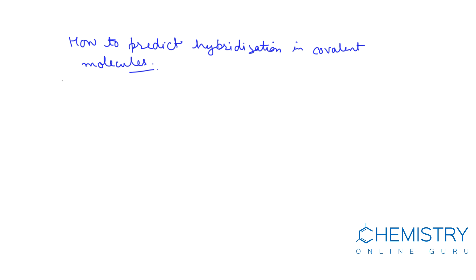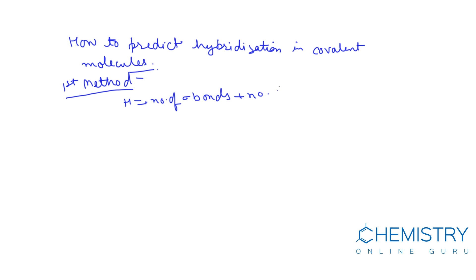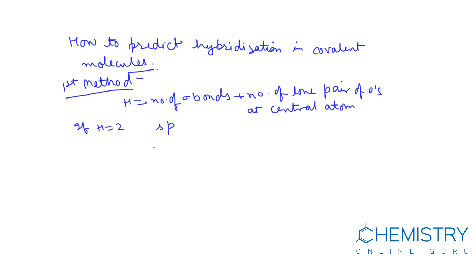There are two methods to predict the type of hybridization. The first method uses: H equals the number of sigma bonds plus the number of lone pairs of electrons at the central atom. If H equals 2, hybridization is sp. If H equals 3, hybridization is sp2. If H equals 4, hybridization is sp3.